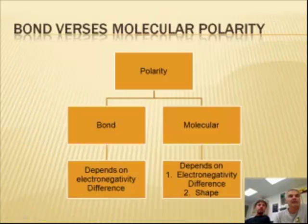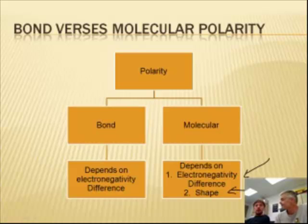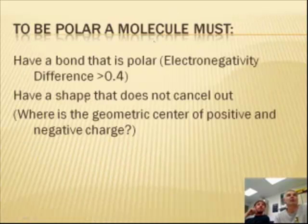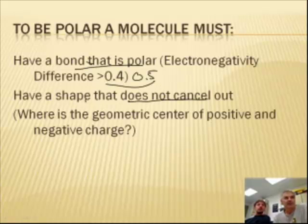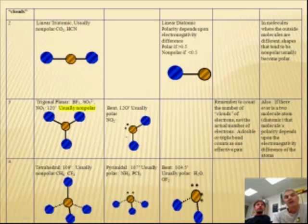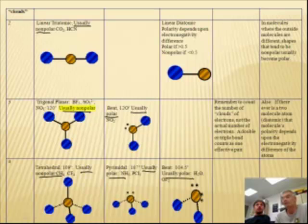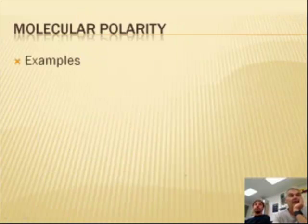When I say this, we go back to this chart. You must have an electronegative bond and you must have a shape that does not cancel out. Two qualities is what you're looking at. The polar molecule must have a bond that is polar. The electronegativity difference is greater than 0.5, and it must have a shape that does not cancel out. Where there's a geometric center of positive and negative charge. You'll see that in an example in just a minute. You use the shape paper. On the shape paper, I put the words usually nonpolar, usually polar, but the word usually does not mean always. Be careful.